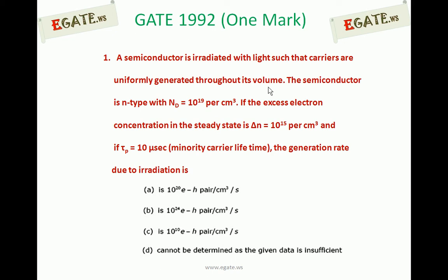A: 10 power 20 electron hole pairs per centimeter cube per second. B: 10 power 24 electron hole pairs per centimeter cube per second. C: 10 power 10 electron hole pairs per centimeter cube per second. D: Cannot be determined as the given data is insufficient.